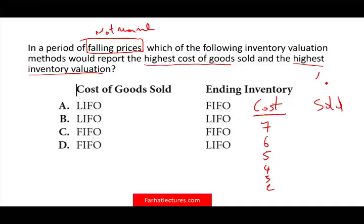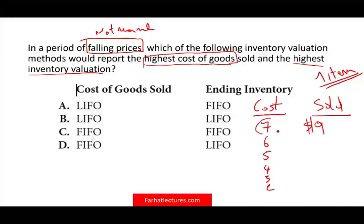I sold one item for $9. Which method gives me the highest cost of goods sold? The highest cost of goods sold means I must be selling the first item purchased — the $7 one. So FIFO gives me the highest cost of goods sold. LIFO is out because prices are falling, so it's down to either C or D. I know COGS goes to FIFO — now which method gives me the highest inventory?